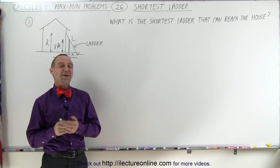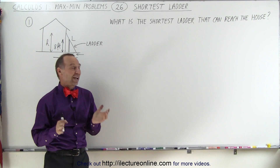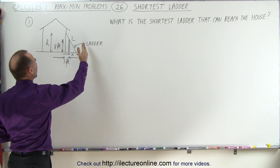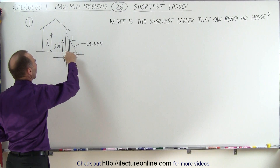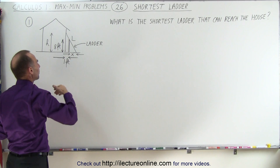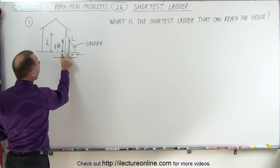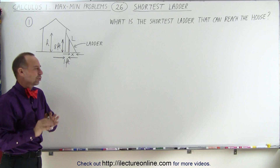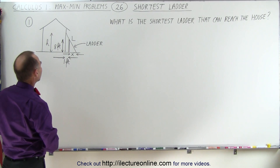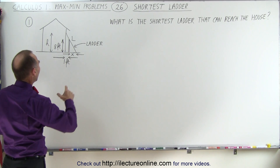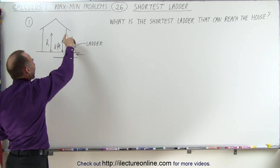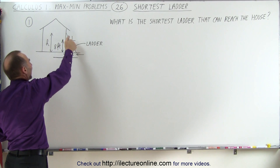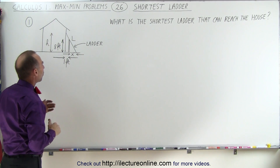Welcome to ElectroLine. Our next problem is actually quite interesting. Let's say that we want to lean a ladder up against the house, but there's an eight-foot wall that we have to go over, and that wall is one foot away from the house. Probably not to code, but let's ignore that. What is the shortest length ladder that we can use, still reach the house, and get over that eight-foot wall?